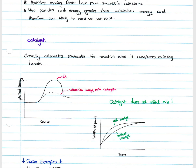On a rate-of-reaction graph comparing a reaction with and without a catalyst: with a catalyst the reaction is much faster and reaches completion much earlier; without a catalyst the reaction is slower and reaches completion at a later stage.